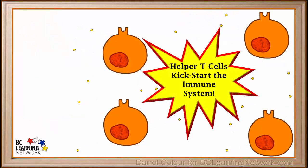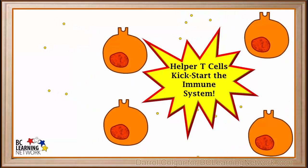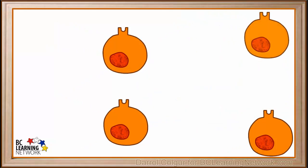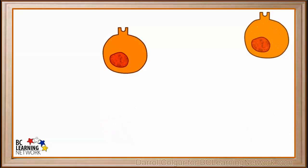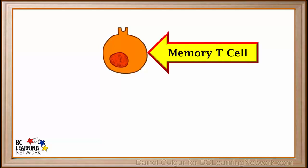So the main purpose of helper T cells is to identify intruders and kick-start the immune system to fight them. When helper T cells are finished their job, usually after a few days, most of them will self-destruct. But a few will remain in the body for a long time. These are called memory T cells.